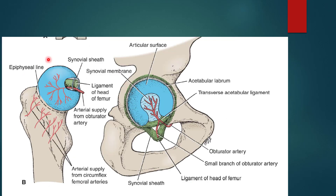The head of the femur, the ball, articulates in the acetabulum — the articular surface of the hip bone — which is deepened by the acetabular labrum and bridged at the acetabular notch by the transverse acetabular ligament. Another important structure is the ligament of the head of the femur, which is attached to the margins of the transverse acetabular ligament.